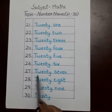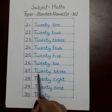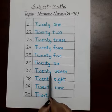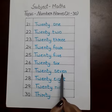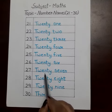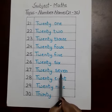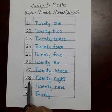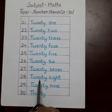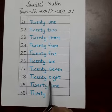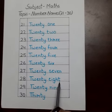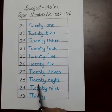27: T-W-E-N-T-Y, 20; S-E-V-E-N, 7. Twenty-seven. 28: T-W-E-N-T-Y, 20; E-I-G-H-T, 8. Twenty-eight.